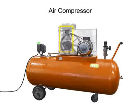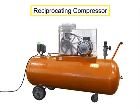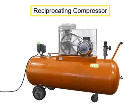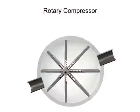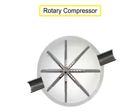Compressors with a piston as the compressing element are called reciprocating compressors. Compressors can also be made with vanes or impellers. These types of compressors are called rotary compressors.